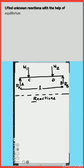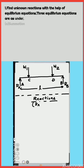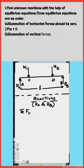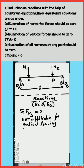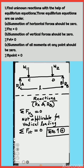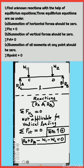To find unknown reactions, use the equilibrium equations. Since the whole structure is in equilibrium, total external forces and moments must be balanced by equal and opposite reactions at supports. Three equilibrium equations apply: a. Summation of horizontal forces should be zero. All horizontal forces acting in the direction of the positive x-axis are taken as positive. This condition is not applicable for vertical loadings.